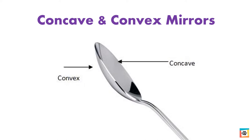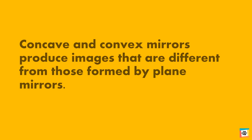On the other hand, a convex mirror has a reflecting surface that bulges outwards, just like the back of a metal spoon. Concave and convex mirrors produce images that are different from those formed by plane mirrors.